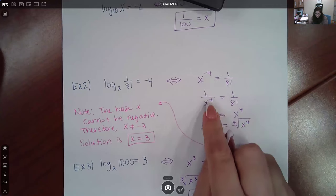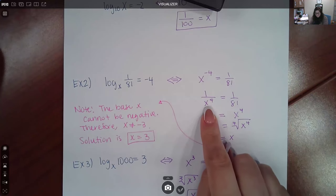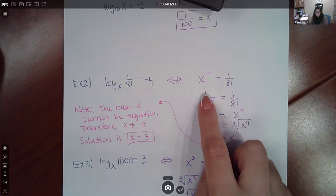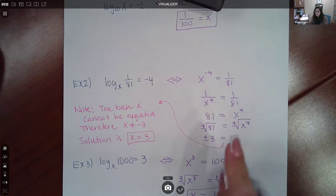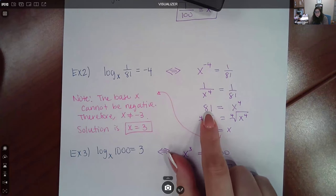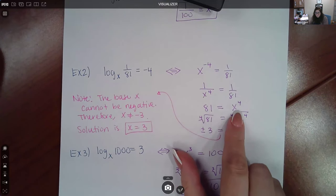Now, this negative exponent can be written as 1 over X to the positive 4 exponent, and then I can cross-multiply or multiply both sides by the common denominator, and the resulting equation is 81 equal to X to the fourth power.